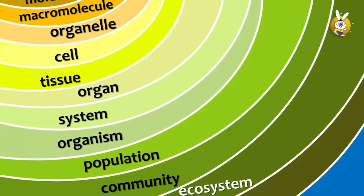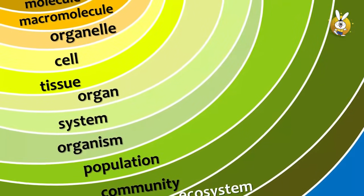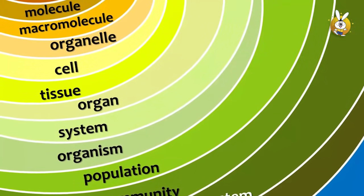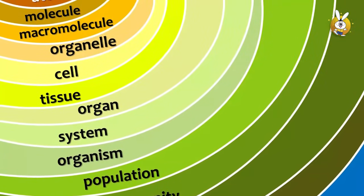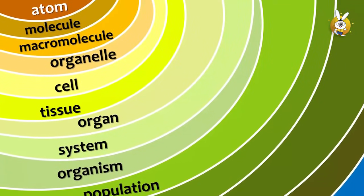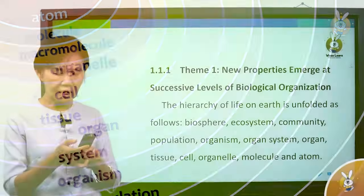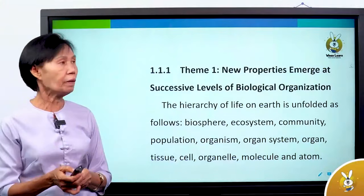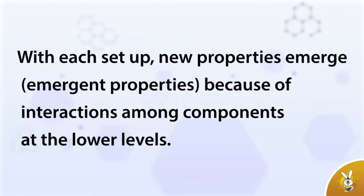The levels include: community, population, organism, organ system, organs, tissues, cells, organelles, molecules, and atoms. New properties emerge because of interaction among components at the lower level.